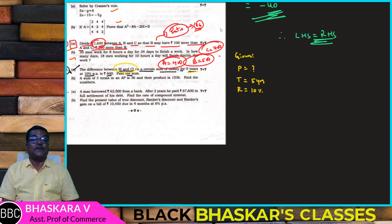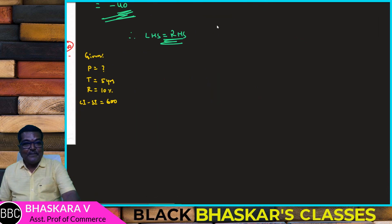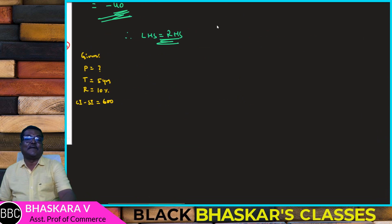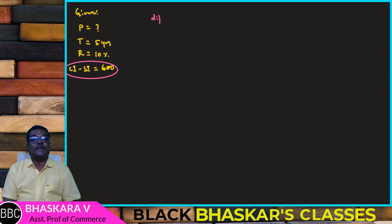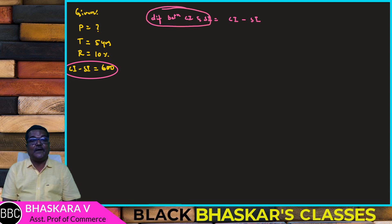We need to find CI and SI. The rate is 10%. Simple interest and compound interest — CI minus SI, the difference between CI and SI is 600.